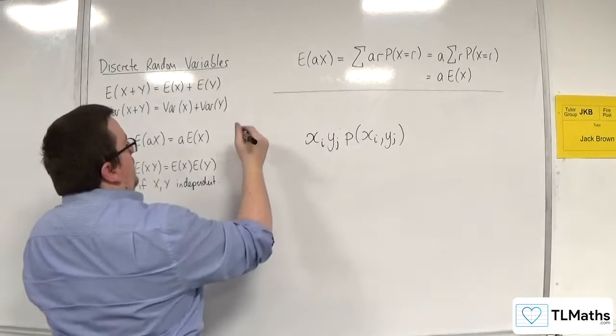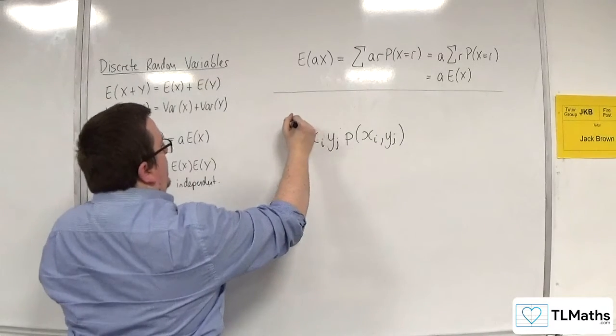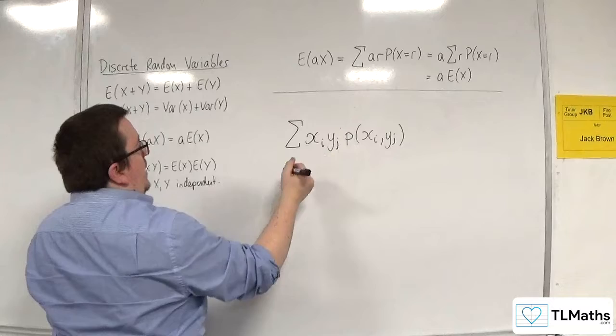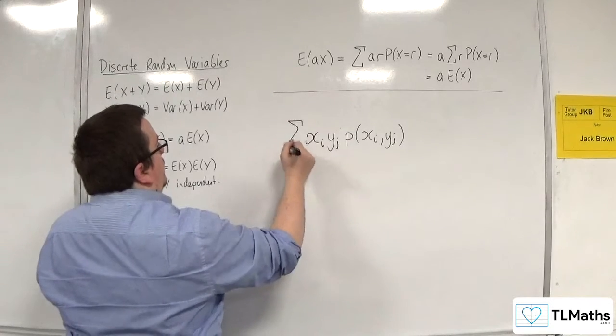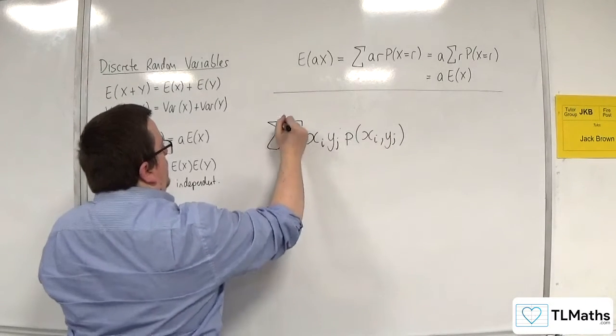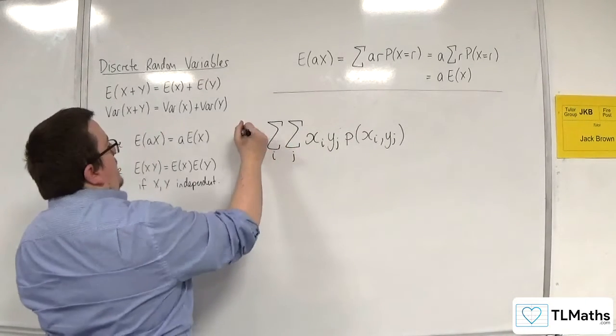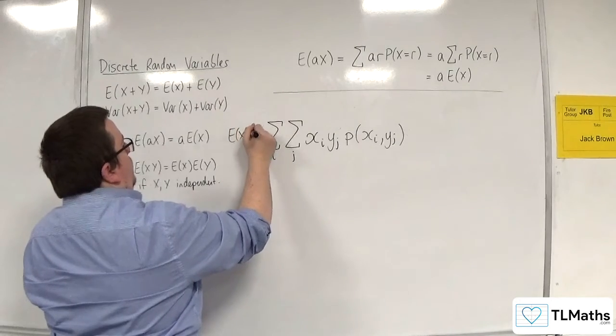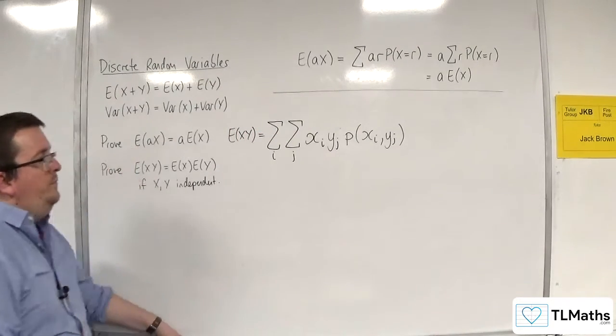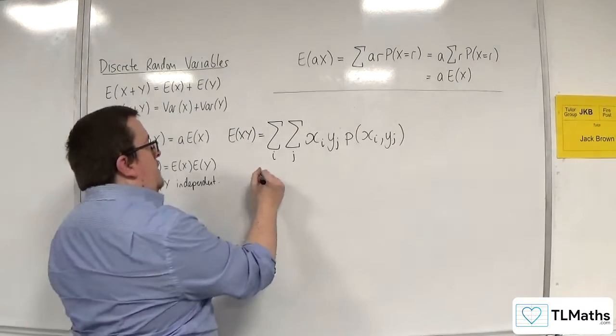So, this, if I add them all together, and remember, because I've got i and j, I'm going to have to have double summations. So, this is E(X,Y).